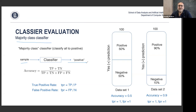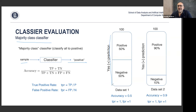Imagine a dataset of 100 customers where we're predicting churn, and the baseline is 50 positives and 50 negatives. If we take this brute-force classifier that calls everything positive, it will be correct for 50 and wrong for 50, giving an accuracy of 0.5. Now take the same classifier and apply it to a dataset of 90 positives and 10 negatives.